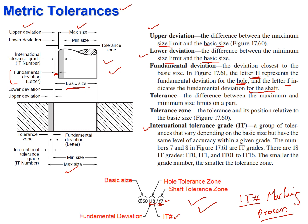These are all the terminologies listed. The tolerance zone is the gray zone shown in the diagram — this is the tolerance zone. So these are the terminologies for the metric tolerance standard.